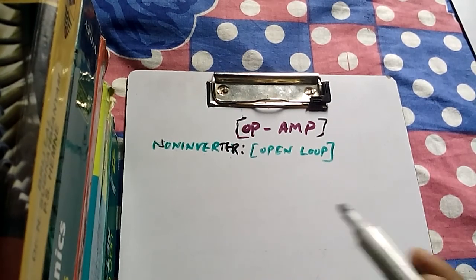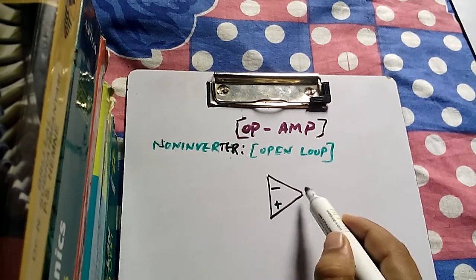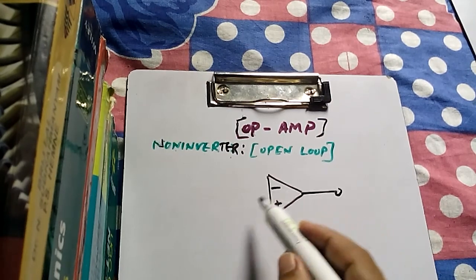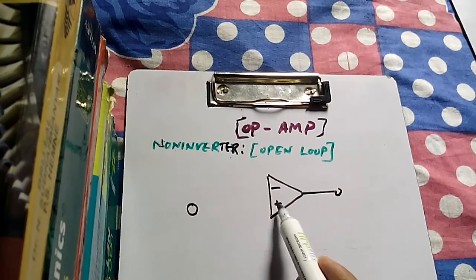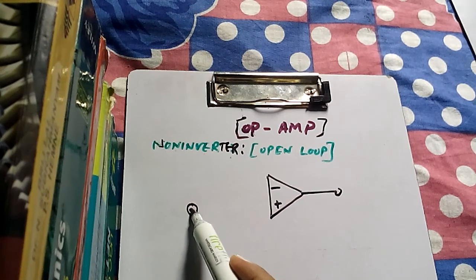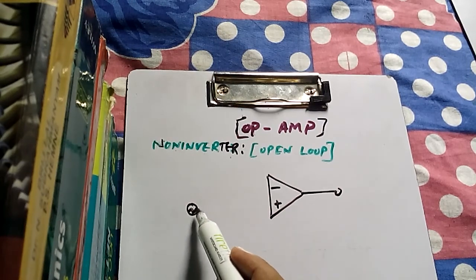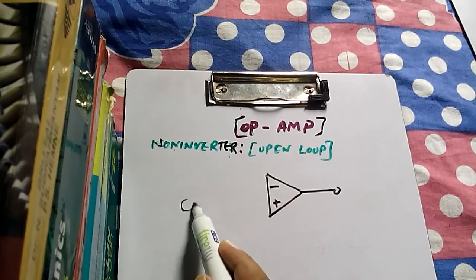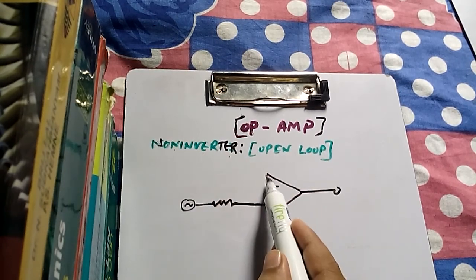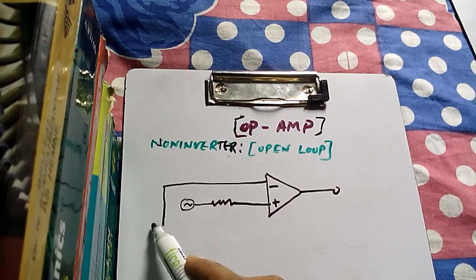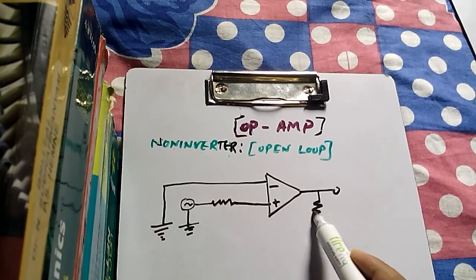Let us see the non-inverter circuit for open loop — when it is open there is no feedback. This is a non-inverter, meaning the input signal goes to the non-inverting terminal, and the positive terminal is the non-inverting terminal. The input can be AC or DC, but now let us take an AC signal. Through a resistor it goes to the non-inverting terminal, and the inverting terminal is grounded. Through a load resistor it also goes to ground.